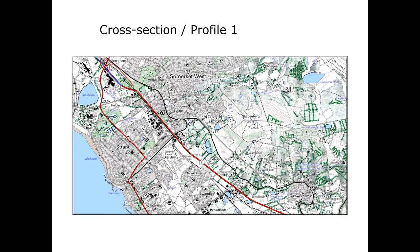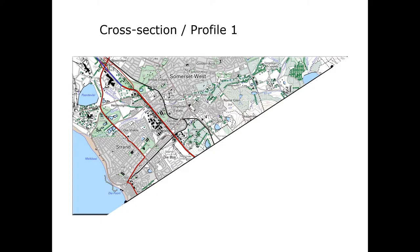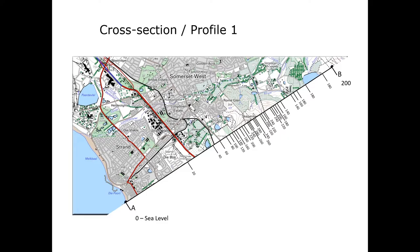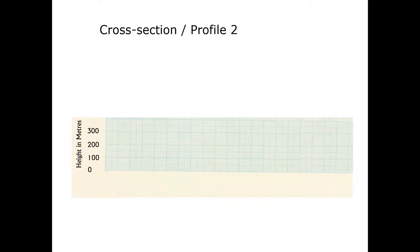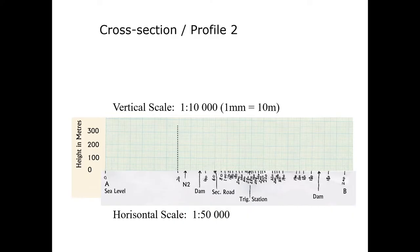With cross sections, these are the points you have to follow. First, I am going to indicate the cross section that I have to draw. I will then place a piece of paper all along that cross section and start marking off various features and heights. I will also indicate features such as the M2, the dam, a secondary road, trigonometrical station and the dam further up. I will then transfer those markings onto my cross section and dot all various heights to complete it.